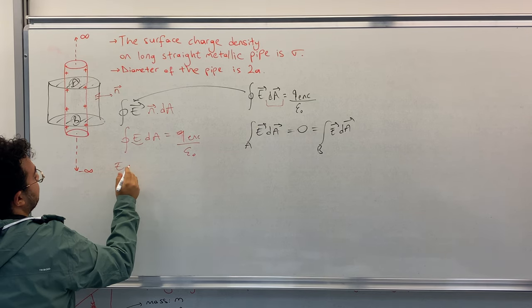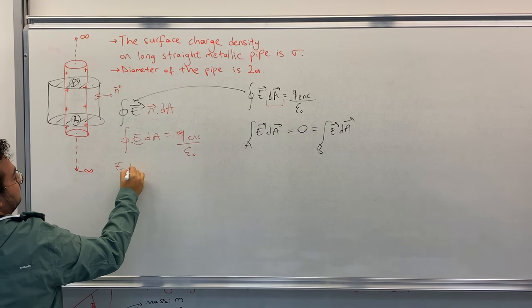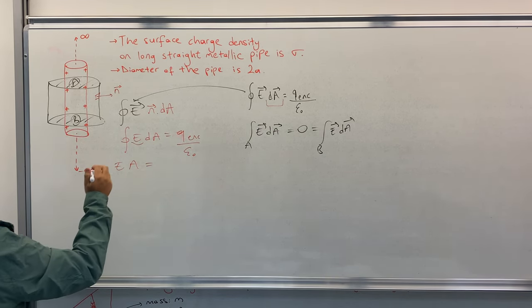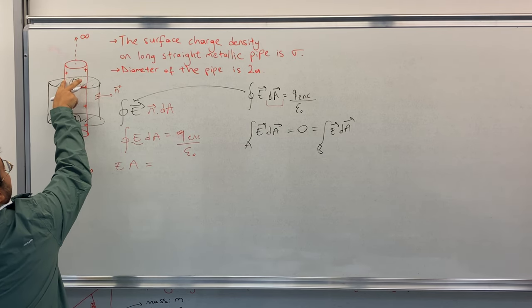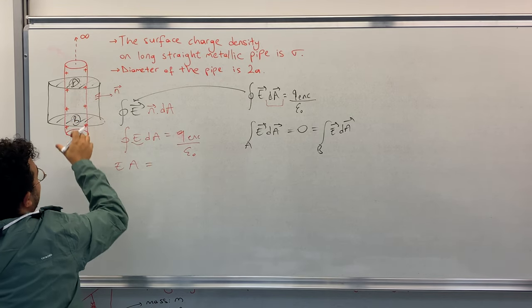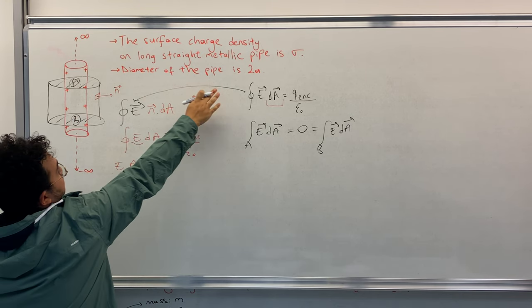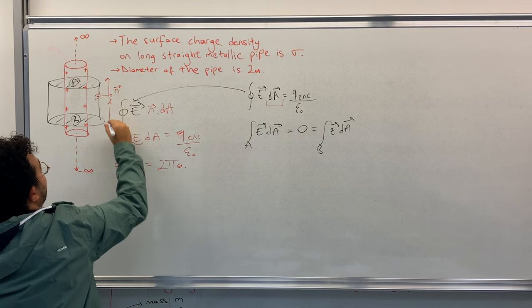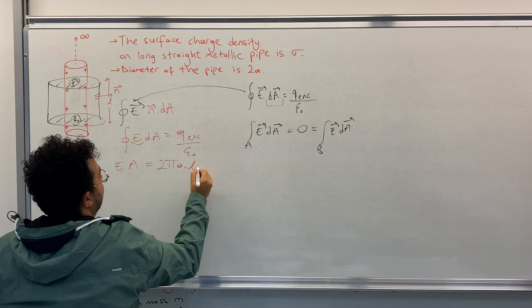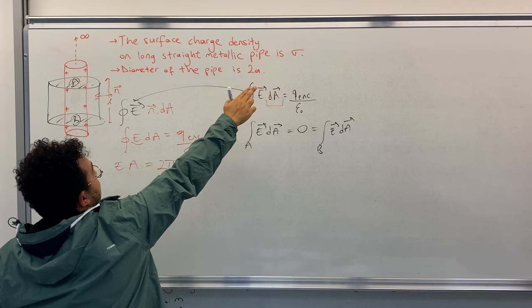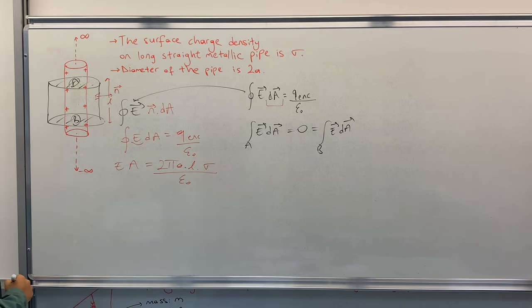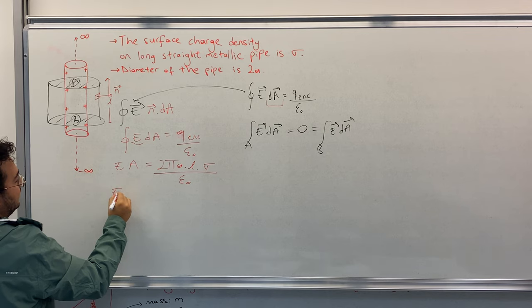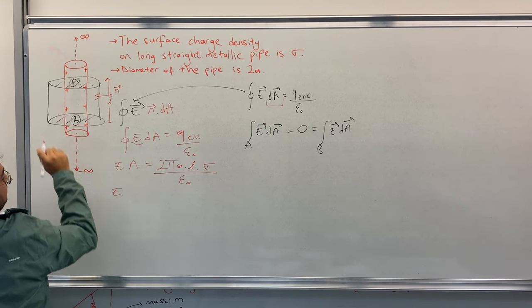So we have integral E·dA equals to Q enclosed divided by epsilon zero. Now this is constant, E is constant and it goes outside, and integral dA equals to EA. Q enclosed will be the area of the surface, 2πa times the length of this cylinder L times sigma, the surface charge density, divided by epsilon zero.